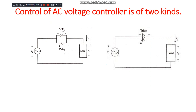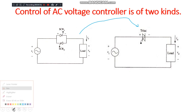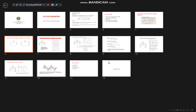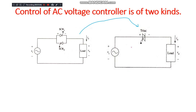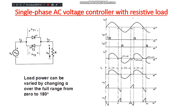Control of an AC voltage controller is of two kinds. The first type uses an anti-parallel connection of thyristors, also called a reverse parallel connection. Both switches can be replaced by a single switch called a triac, which is an advanced switch used for direct AC to AC conversion from fixed voltage to variable voltage. For single phase AC voltage control with resistive load, we use a simple anti-parallel connection of thyristors — one thyristor acts for the positive half cycle and the other for the negative half cycle. The fixed AC supply is given to the load.